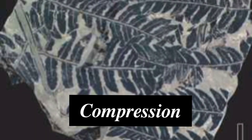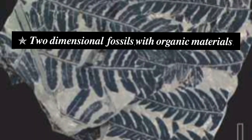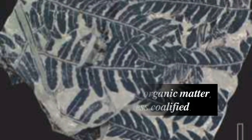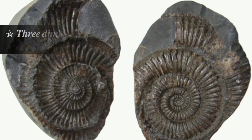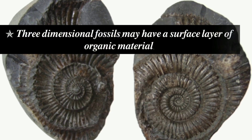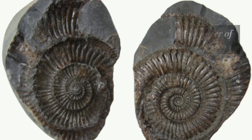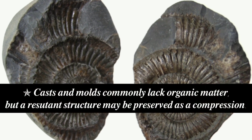Compression fossils are two-dimensional fossils with organic material. Compression retains organic matter, usually more or less coalified. Cast and Moulds are three-dimensional fossils that may have a surface layer of organic material.